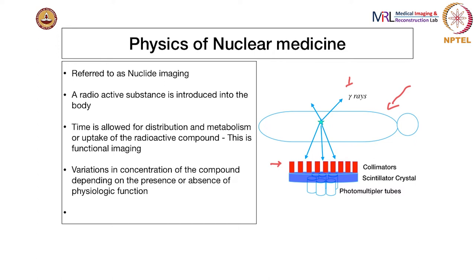There is a big difference between this and the other modalities: the source is actually inside the body. If you look at all other imaging systems there is usually a deposition of energy — in the form of radio frequency in MRI, an X-ray source outside the body, or an ultrasound source — all of which are outside the body and travel through before being sensed outside again. In radionuclide imaging, the source of radiation that we are sensing actually comes from inside; we have injected it and the idea is to localize and measure it.